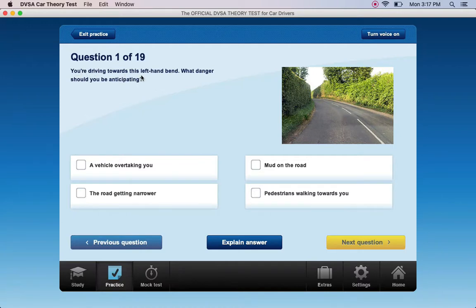You're driving towards this left hand bend. What danger should you be anticipating? A vehicle overtaking you? Mud on the road? The road getting narrower? Pedestrians walking towards you? Pedestrians walking towards you.